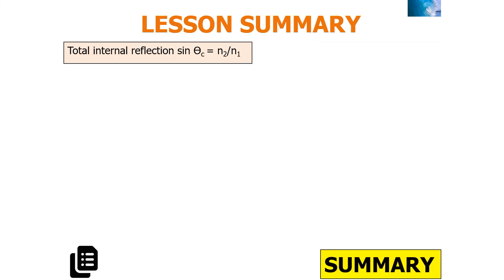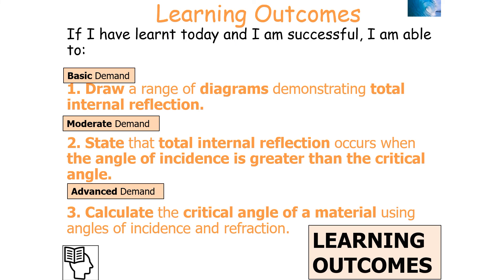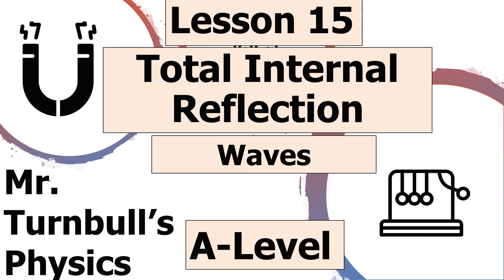In today's lesson we've looked at total internal reflection and calculating the critical angle using sine theta c equals n2 over n1. You should be able to draw diagrams demonstrating total internal reflection, state that it occurs when the angle of incidence is greater than the critical angle, and calculate the critical angle using angles of incidence and refraction. Thank you very much for watching this lesson on total internal reflection, part of the Waves topic in AQA A-level physics.